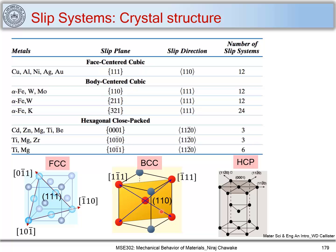In case of BCC, the slip plane is {110}, which contains two slip directions of the <111> type, accounting for 12 slip systems. There are other slip planes and the slip direction remains the same, giving a total of 48 slip systems for BCC. In case of HCP, the slip system comprises the (0001) basal plane and the slip direction is the <11-20> direction, with three directions lying in this basal plane.